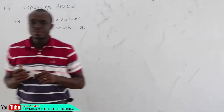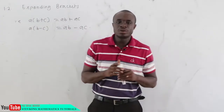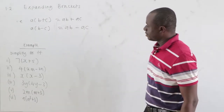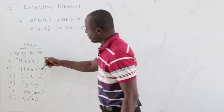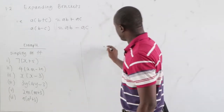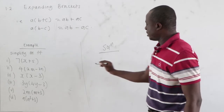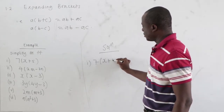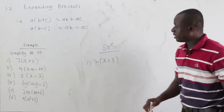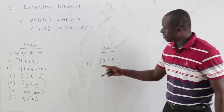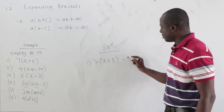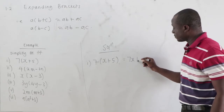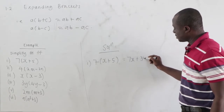Now let's consider the following examples for better understanding — simplify the following. First: 7 times x plus 5. Applying the distributive property: 7 times x equals 7x, and 7 times 5 equals 35. So the answer is 7x plus 35.